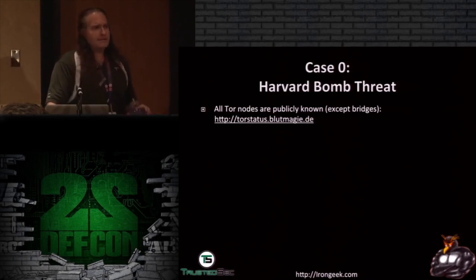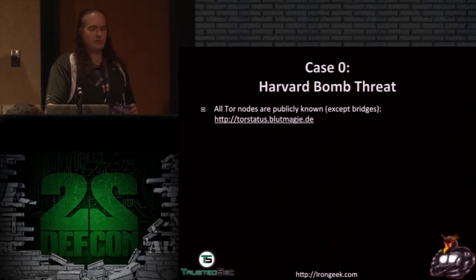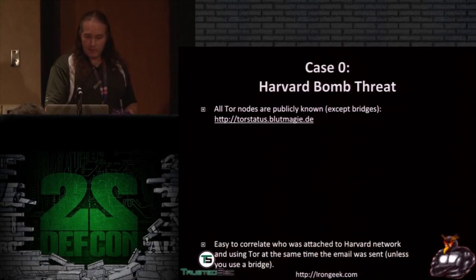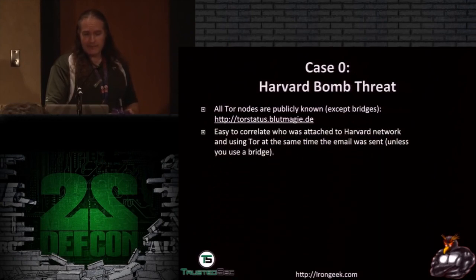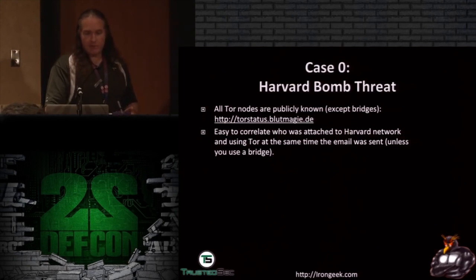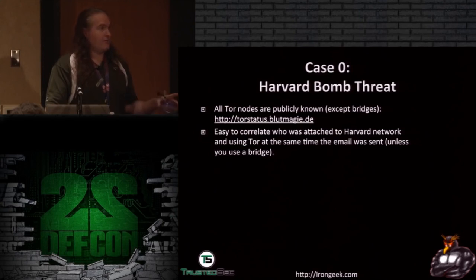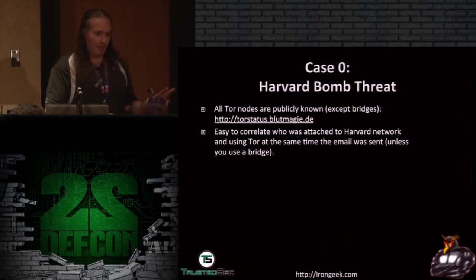All Tor nodes are public, and it's easy to figure out if a machine is Tor or not — there's a reverse DNS you can use, and a lot of times Tor nodes even have 'Tor' in their name. So it's easy to correlate who was connecting. If this guy had been using a bridge, that wouldn't have been advertised in Tor's directories and he probably would have gotten away with it. Or if he'd just walked to a local coffee shop and used Tor there, he probably would have gotten away with it.